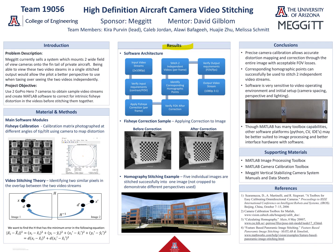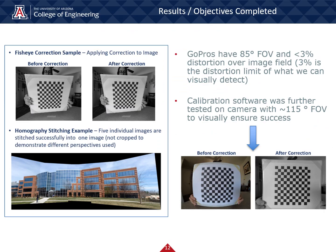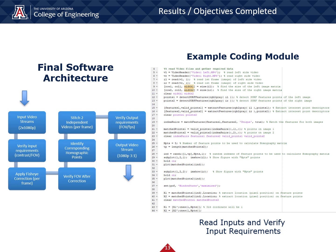Moving on to our team's results section, I will talk about all the progress we have made from our models and analysis, as well as detailing our software design document. This will give us a good idea of where we currently stand in this project. The results of our fisheye camera calibration show that the GoPros have less than 3% distortion at their 85 degree field of view. Since our system requirements specify less than 5% distortion, we do not actually need to correct for distortions in videos from the GoPros specifically. This is why in the first set of before and after correction images we do not see much of a change. Since 3% distortion is the limit of what humans can discern visually, we further tested a more severe wide angle lens to make sure our fisheye correction software was effective for future applications with our sponsor. We were also able to successfully use homography stitching theory to merge images or future video frames of various perspectives. This diagram gives a high-level overview of our software architecture and demonstrates the progression of software modules within the software itself as well as its functions. An example of a software module is shown which completes the first two tasks in the architecture.